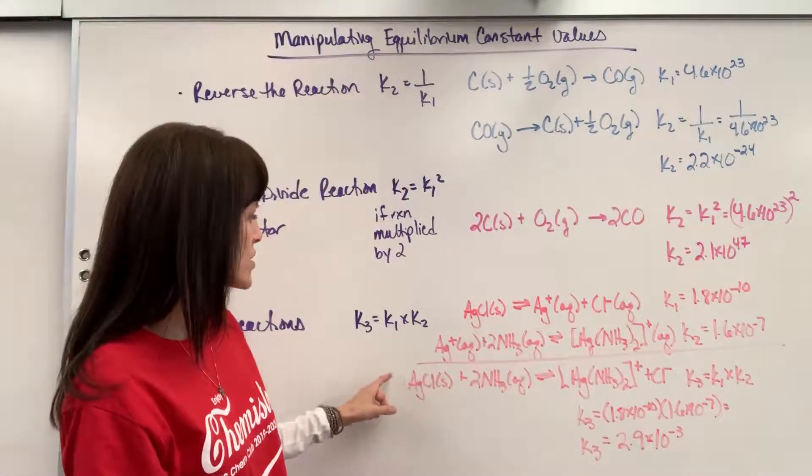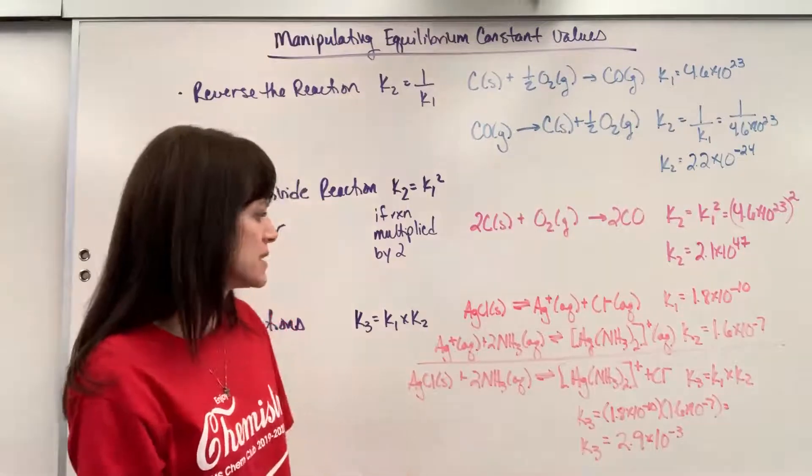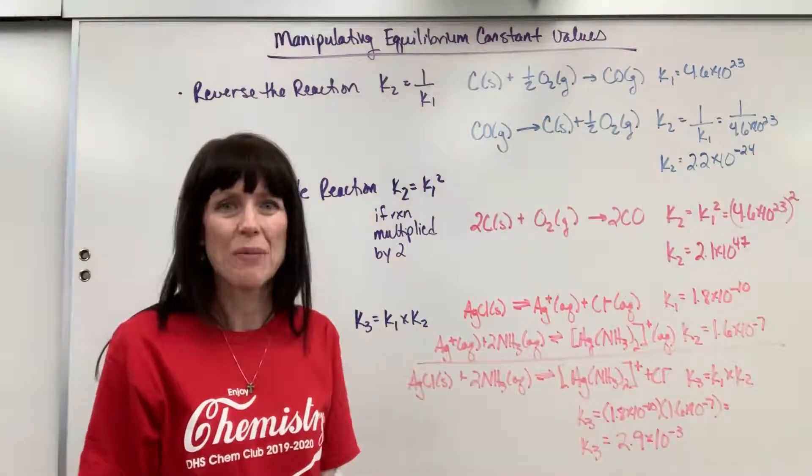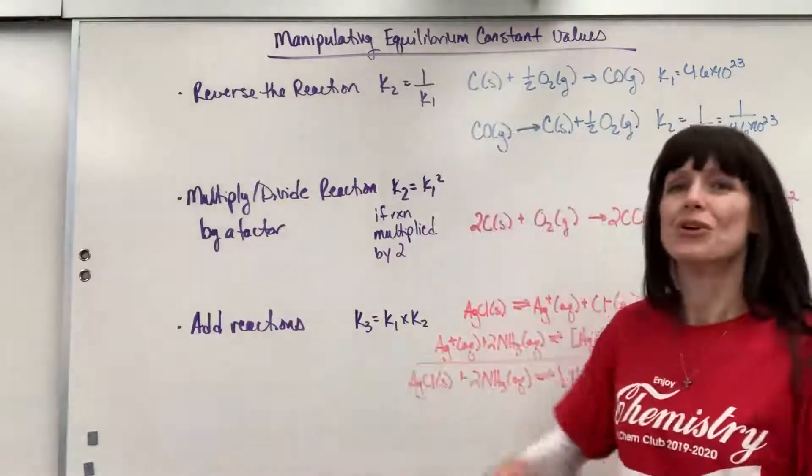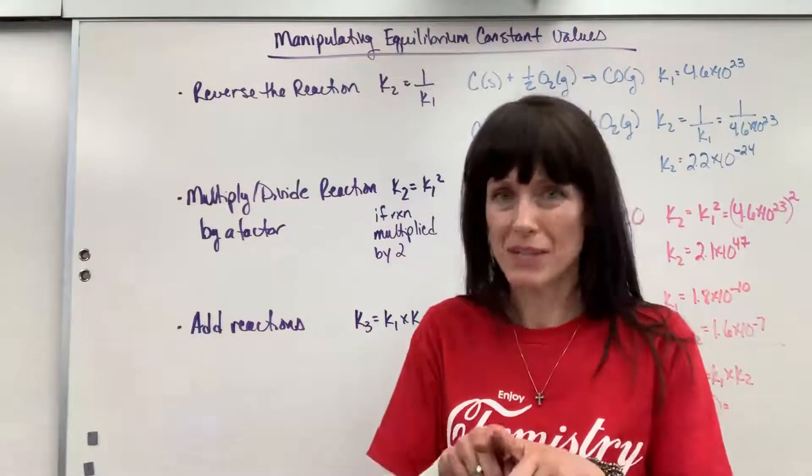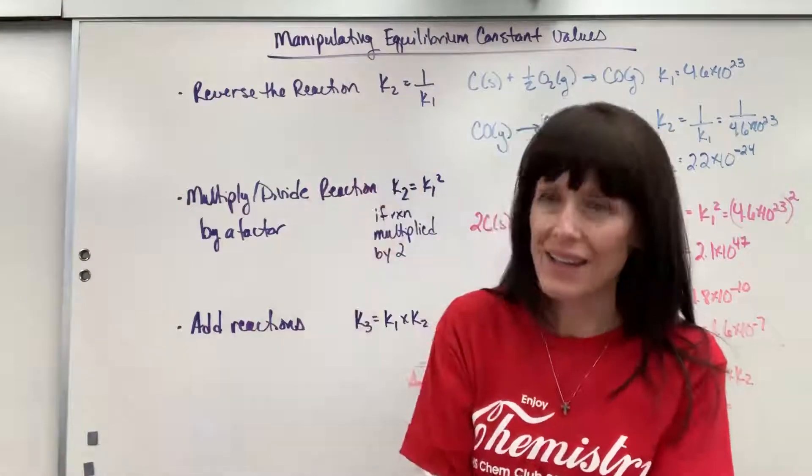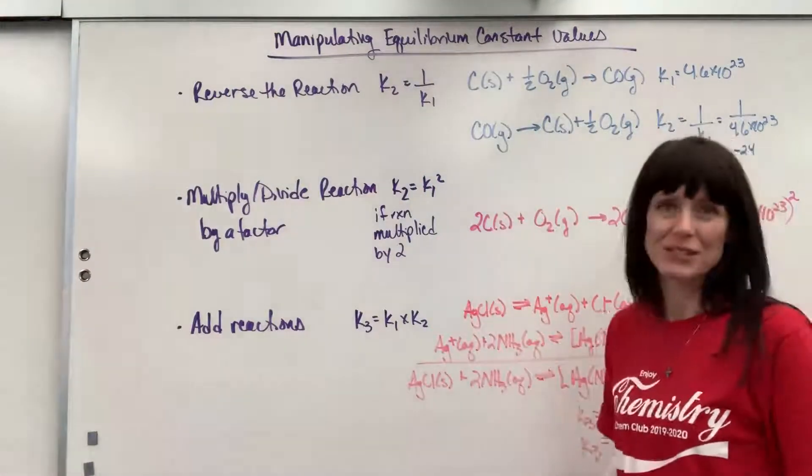Now for this, you could actually write products over reactants and you'd be able to see how that math works out. It's a little bit of work doing that. So just trust me, you multiply equilibrium expressions when you add the two reactions.